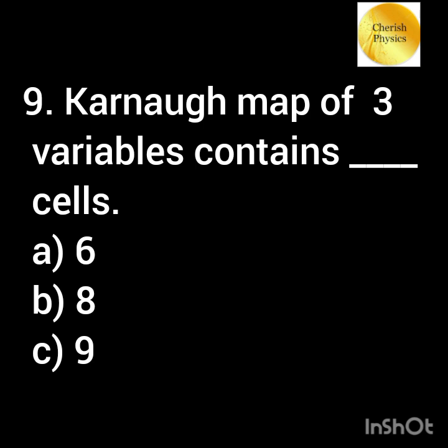A Karnaugh map of three variables contains dash number of cells. Option A: 6. Option B: 8. Option C: 9.